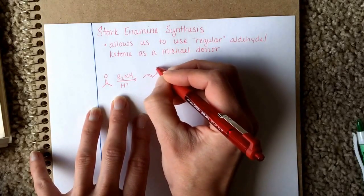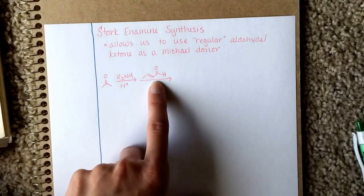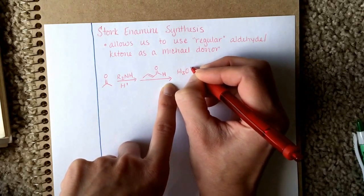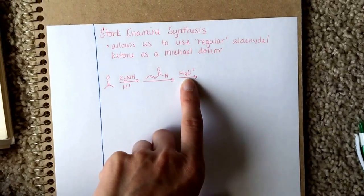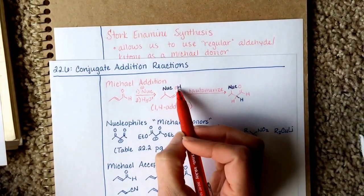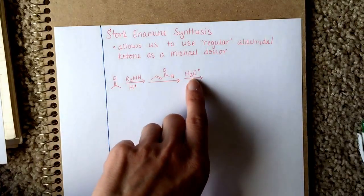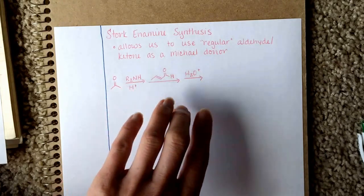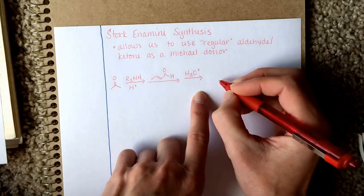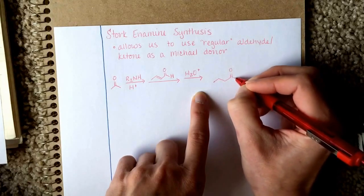And then do the Michael Addition reaction with some sort of Michael acceptor. I'm just choosing this guy for the Michael acceptor. Step two of the Michael Addition reaction is H3O+, as you know. The H3O+ serves to protonate the product of the Michael Addition reaction. It also is used to convert an enamine back into an aldehyde or ketone.